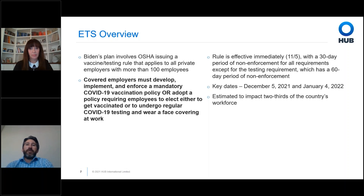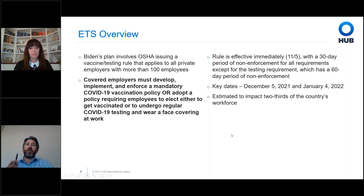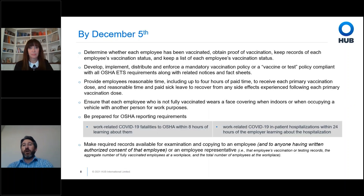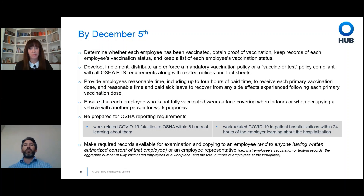Key dates to remember: the November 5th publication date in the Federal Register means December 5th is when many requirements become effective. January 4th is the deadline for the testing or vaccination requirement. Policies, procedures, reviewing and creating rosters, and maintaining documents come into effect in December. Then later we see the testing or vaccination requirement take effect.